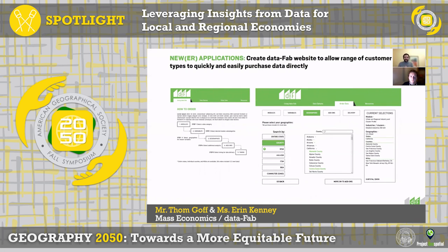Lastly, we are creating a website to enable a range of customers to quickly and easily directly purchase the QCW data and also the other datasets as well. We're also organizing all the data into different modules by type of data and related indicators and variables — a one-stop shop to provide a picture of different topics ranging from agriculture to capital and lending activity to industry and cluster data.